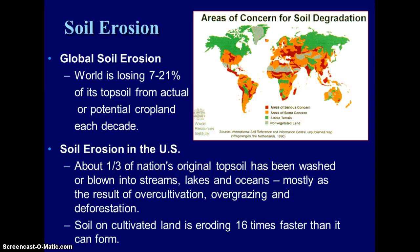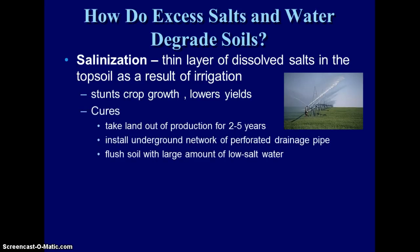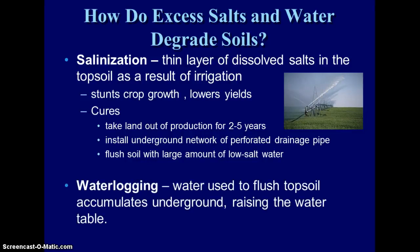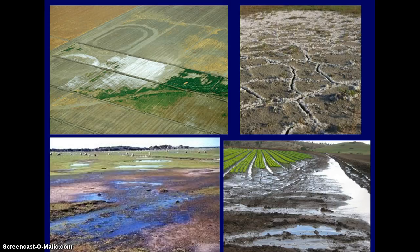If we aren't using something sustainably, that is what degradation is. Irrigation leads to salinization — dissolved salts are left behind when plants draw in water or water evaporates, and that stunts crop growth, as we saw with our radish seeds. To alleviate the problem, you can let the land sit for two to five years, install a drainage system, and flush the soil with low-salt water. However, flushing can cause the water table to rise, leading to water logging.